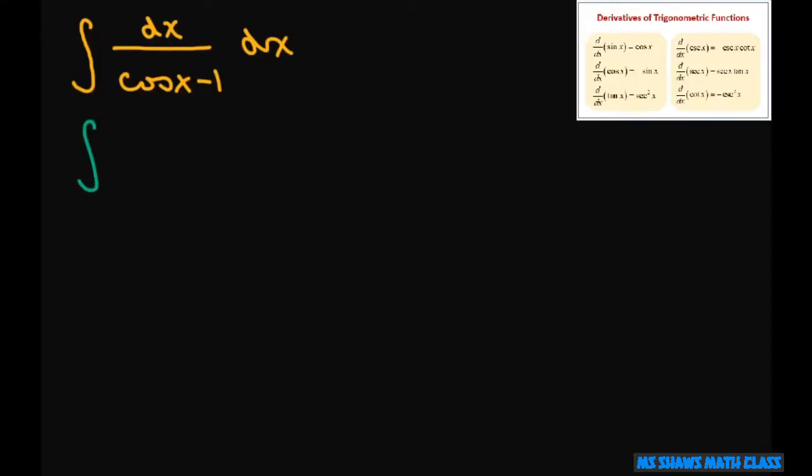And what we're going to do is take this integral and multiply it by cosine x plus 1, both the numerator and the denominator. So what that's going to give you – this is like your a plus b, a minus b.